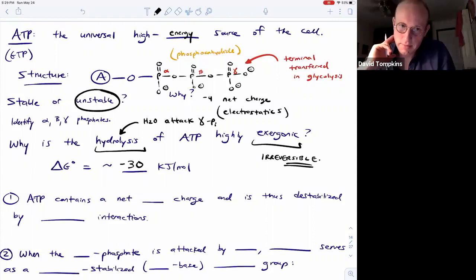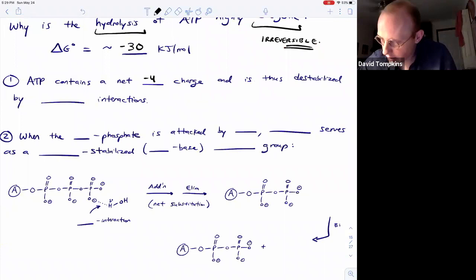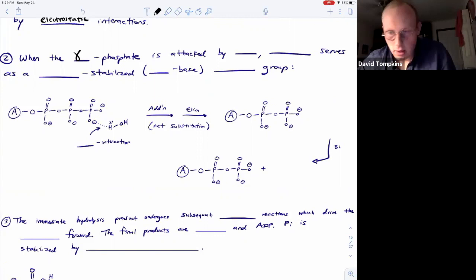But ATP alone in water will undergo hydrolysis, and there are four main reasons for why this is so exergonic. The first is that ATP contains a negative four net charge and thus it is destabilized by electrostatic repulsion between the oxygens. Second of all, when the gamma phosphate is attacked by water, that removes the phosphate, so then you have ADP diphosphate, which is a resonance-stabilized leaving group, or in other words a weak base which is a good leaving group.